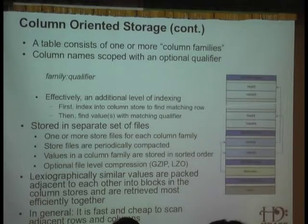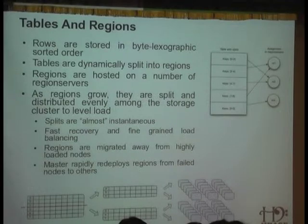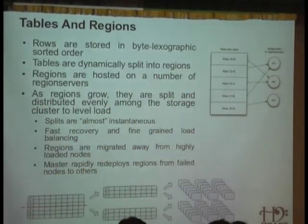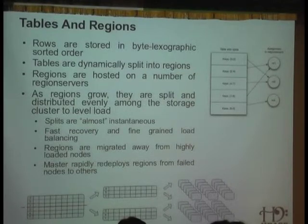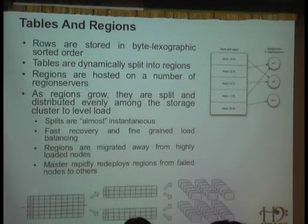The takeaway is that in general it's fast and cheap to scan adjacent rows and columns. Rows are stored in sorted order, and each column has its own file. As tables grow, they are dynamically split into regions, which are then distributed to region servers. There can be any number of region servers on the platform — there's no architectural limit. In theory, you can support petabytes of data by just adding more region servers over time.